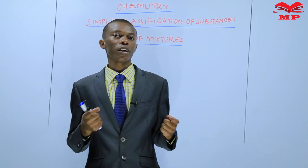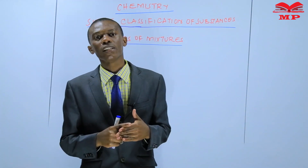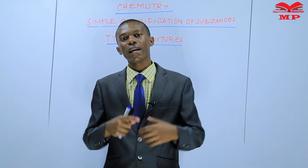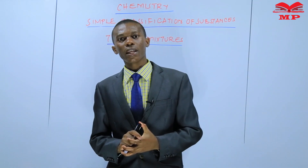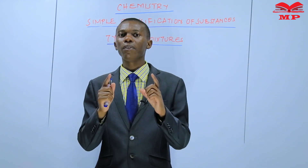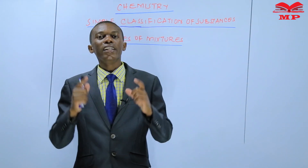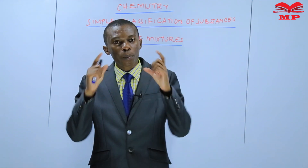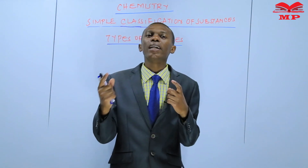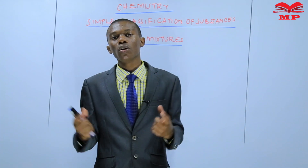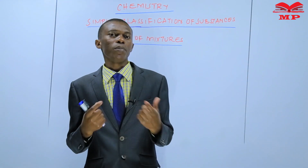Examples of physical methods of separation include picking, sieving, winnowing, evaporation, filtration, and decantation. There are many other physical methods. The choice of method depends on the properties of the individual components forming the mixture. For example, you cannot use a magnet to separate maize and beans because neither of them is magnetic, and therefore you will not succeed.